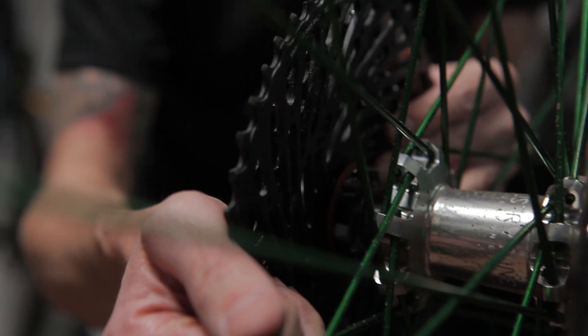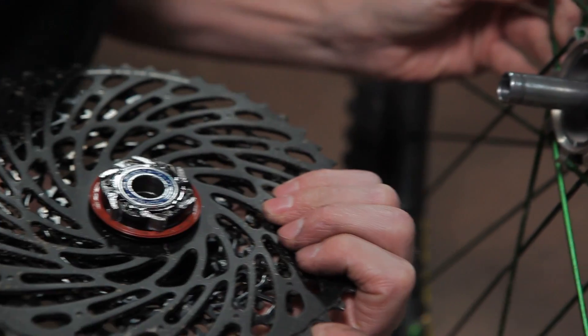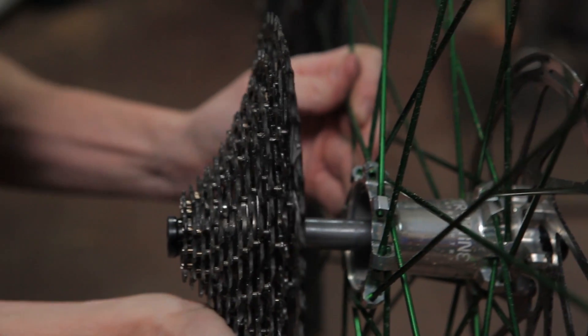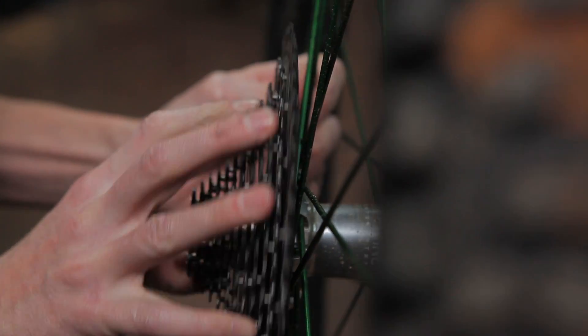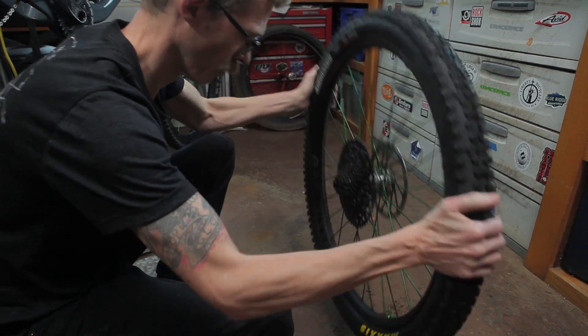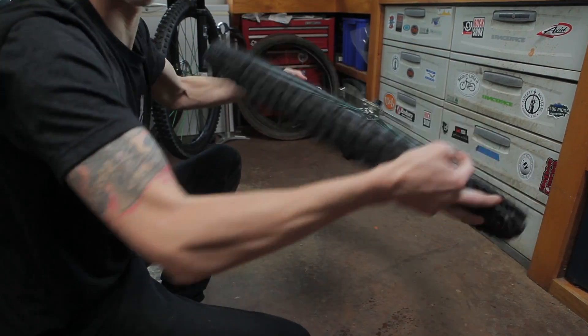The new Hydra system allows you to pull the freehub body and cassette off as one piece. It can easily be reinstalled in this way as well. With an updated axle and end cap design, the freehub and drive mechanism are held firmly in place but can be removed when needed.